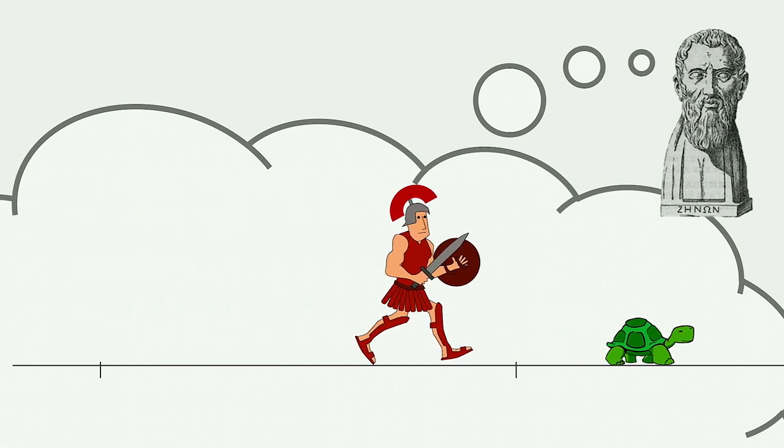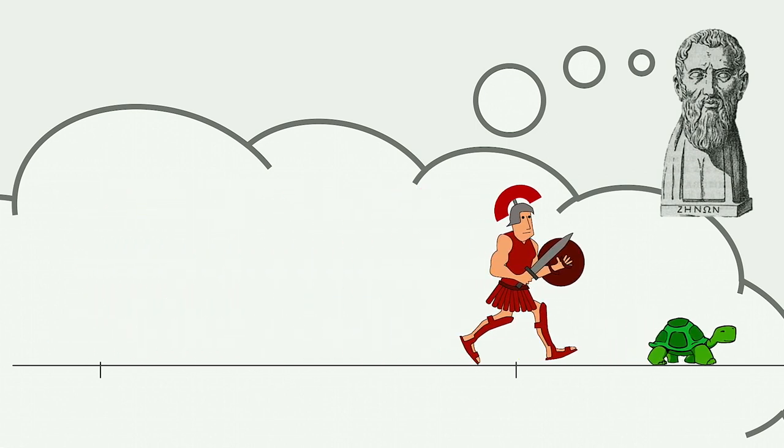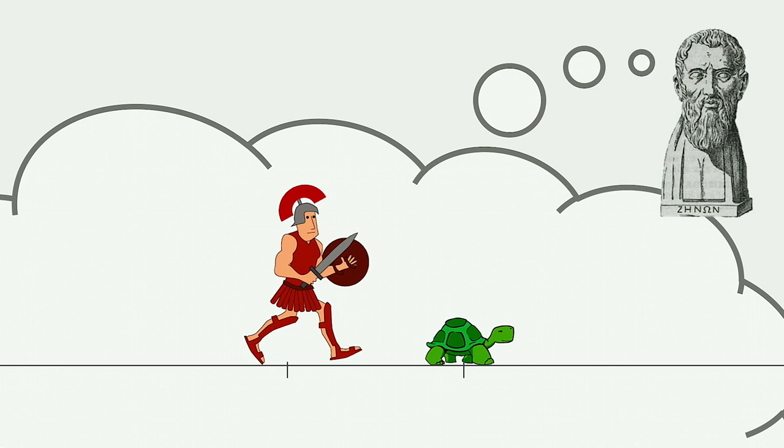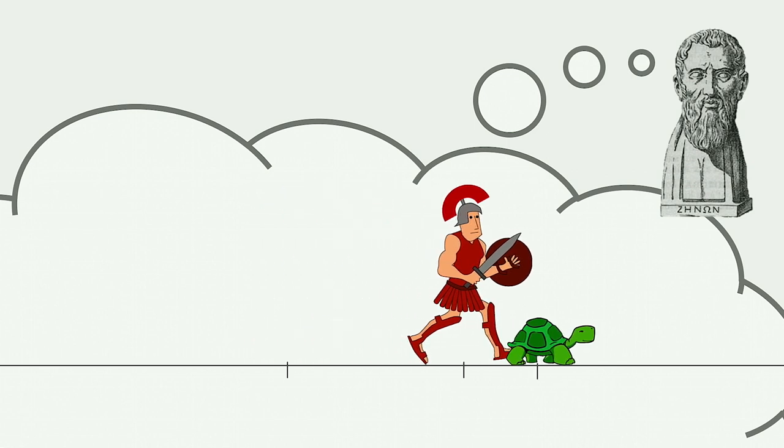But when Achilles has run that distance, the tortoise will also have moved. So there is still some distance between them. Achilles also has to run this distance, but by the time he has done so, the tortoise has moved too. So again, there is some distance between them.